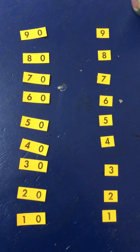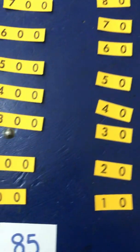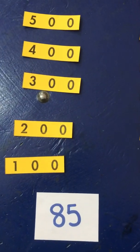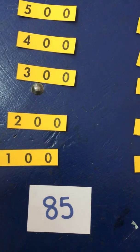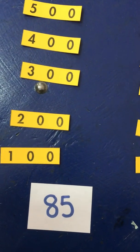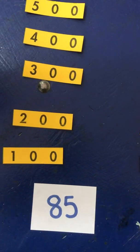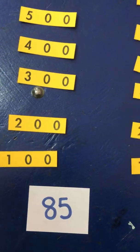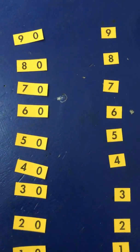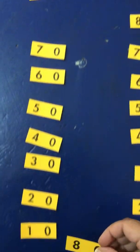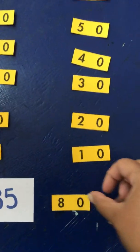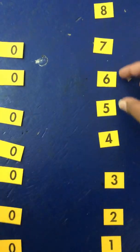The first number we want to build is 85. To build 85, listen to the number: 85. So we are going to choose the cards that make 85. We need 80 and we need 5.